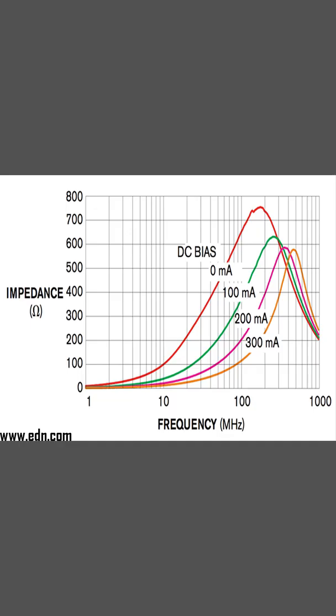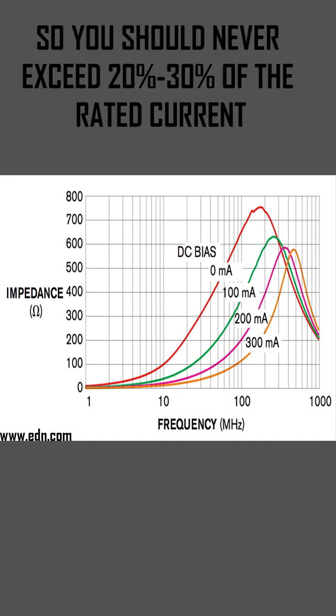The amount of DC current going through the ferrite greatly reduces the impedance of the bead, sometimes upwards of 70 to 90 percent, so you should never exceed 20 to 30 percent of the rated current.